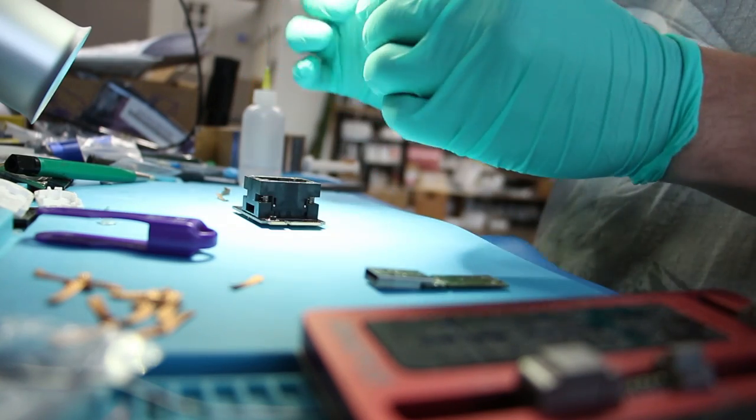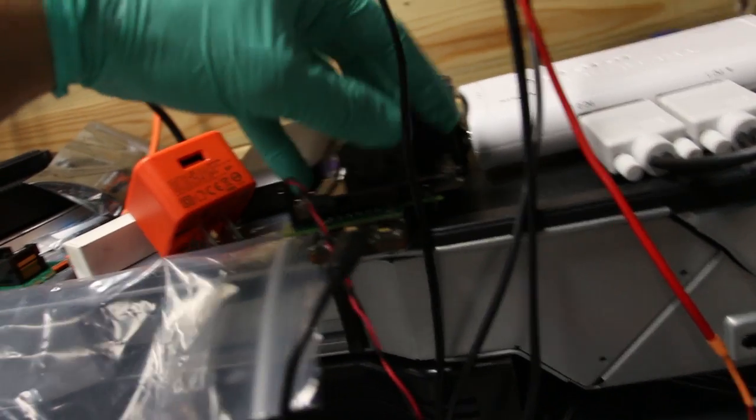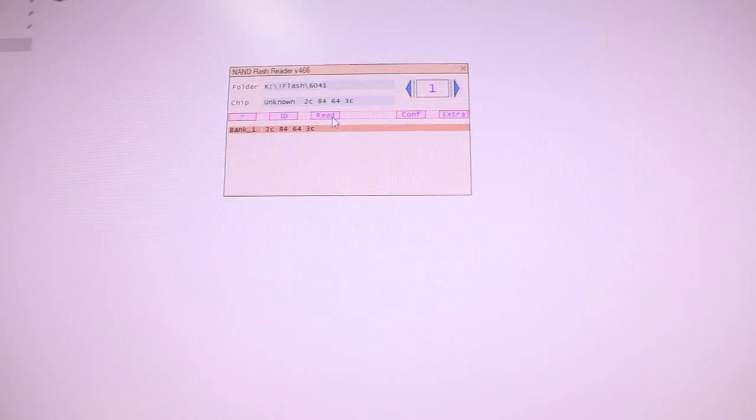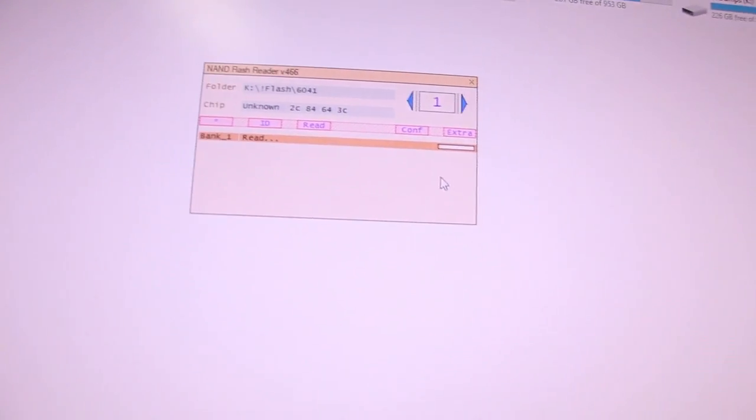Pin one, pin number one. It goes in there, like that. Reader software, you get ID for the first bank. It's recognized as 16 gig NAND, and now we just set it up to read. This is going to take a while, probably like half an hour.